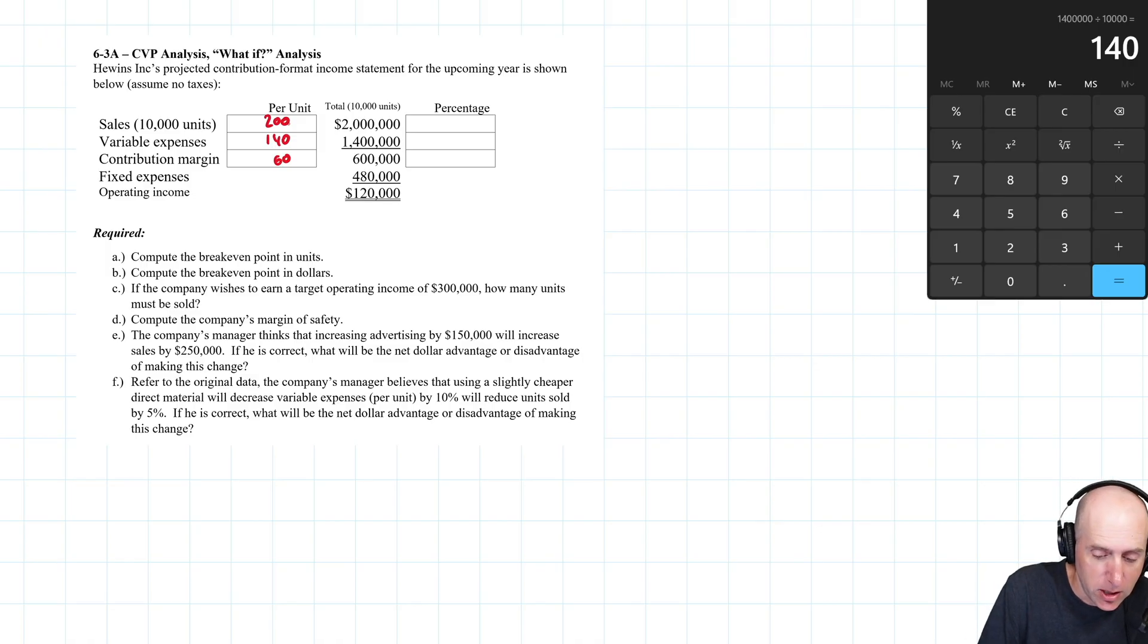Our variable expense is 1.4 million divided by 10,000 units, $140 a unit, and it's going to be $60 a unit for contribution margin. As percentages, we set everything as a percentage of sales. This is 100%, 1.4 million divided by 2 million is 70%, and 600,000 divided by 2 million is 30%.